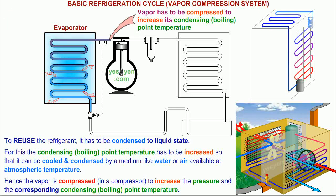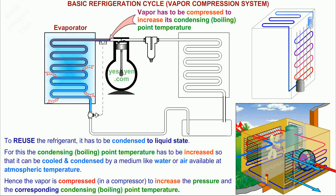To reuse the refrigerant, it has to be condensed to liquid state. For this, the condensing — that is boiling point temperature — has to be increased, so that it can be cooled and condensed by a medium like water or air available at atmospheric temperature. Hence the vapor is compressed in a compressor to increase the pressure and the corresponding condensing, that is boiling point temperature.